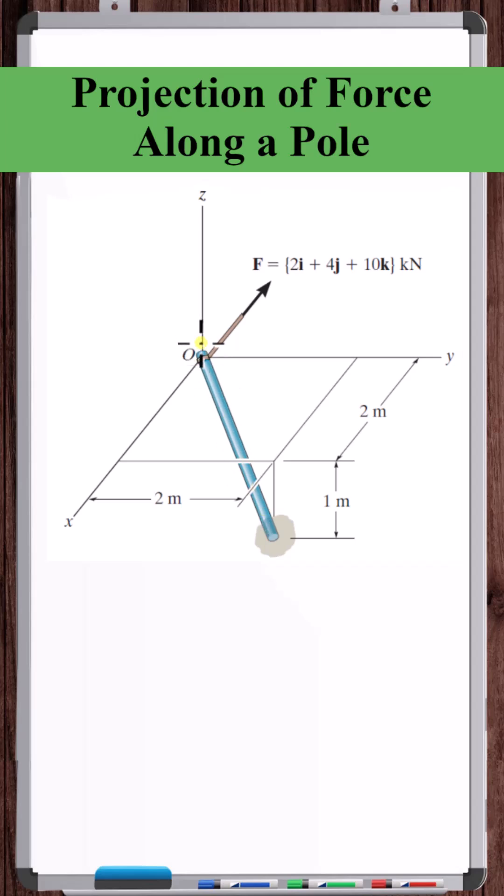So let's get a unit vector in the direction of the pole. Let's start by getting the position vector of the pole, the position vector from the origin to this point. You go two units in the x, two in the y, and minus one in the z.